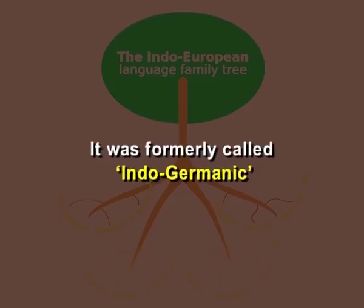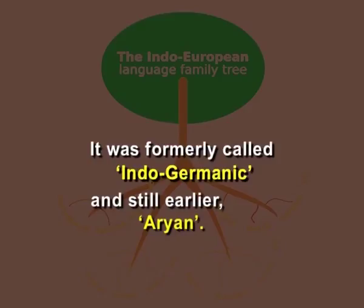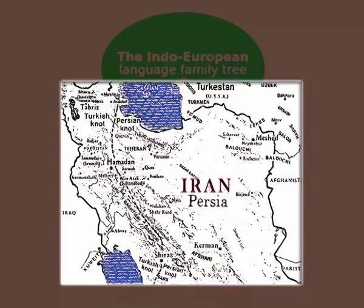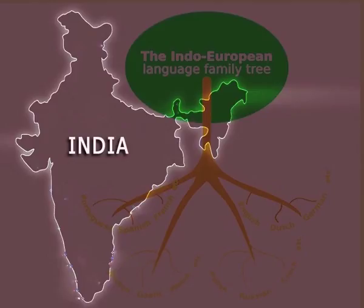English was formerly called Indo-Germanic, and still earlier it was called Aryan — pronounced in both ways, Aryan and Aryan. Indo-European is the name given to the set of linguistic forms from which nearly all European languages as well as those of Persia and a very large part of India can be proved to have descended.